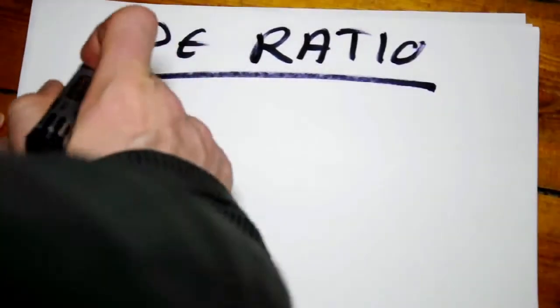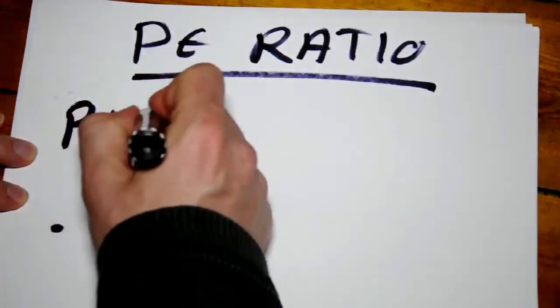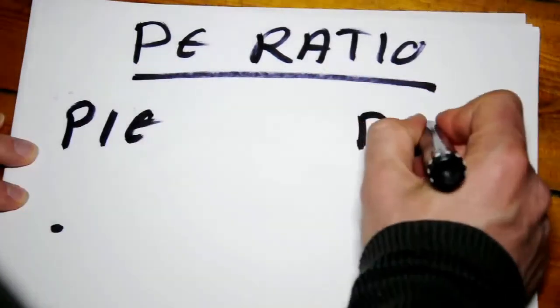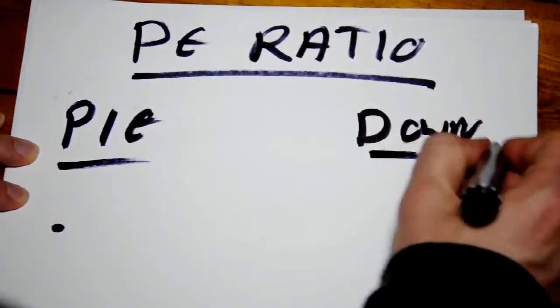Let's assume you've got two companies. You've got one company called Pie in the Sky and you've got another company called Down to Earth.